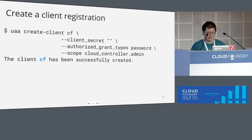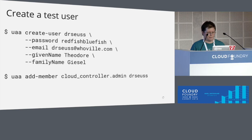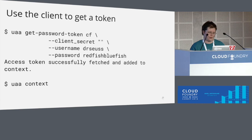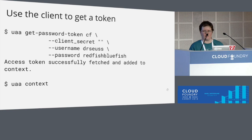That should succeed because we have a token with administrative scope. Before we can test it out we also have to create a user — this is what a create-user command would look like. I always use Dr. Seuss in my examples. Pretty straightforward: you need a password and an email address, names are optional. We also need to assign membership to our test user, giving him membership in the cloud_controller.admin group. Now that we have that client and that test user, we can use the 'get-password-token' command, passing all four pieces of information — the client ID, the client secret, the username, and the password — to get that token. This is exactly what the CF CLI does today.